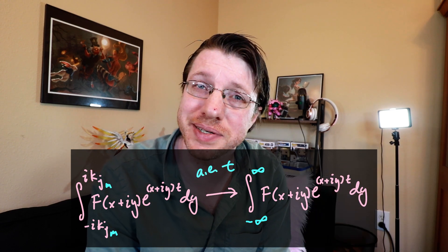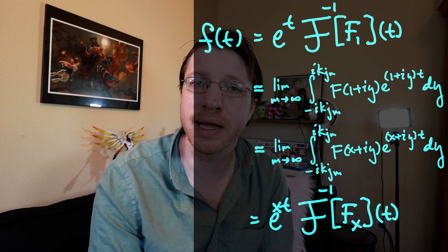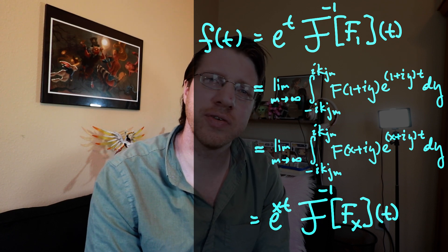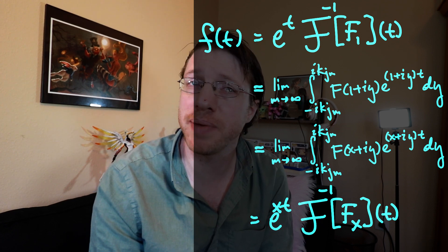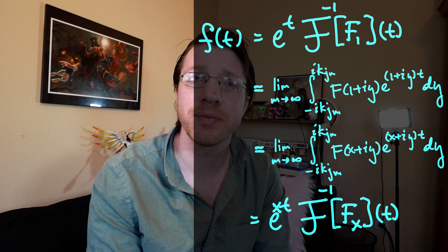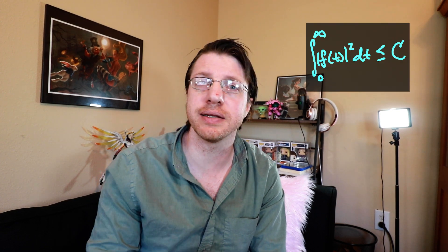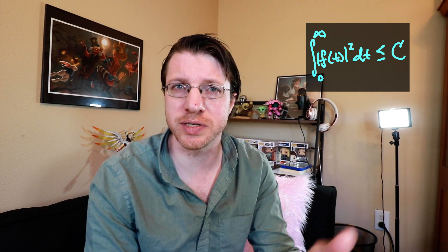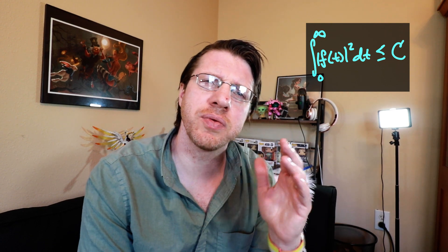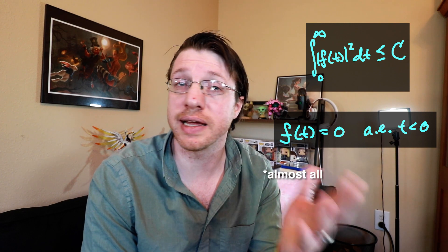We have now established a chain of equalities. Starting with our signal f, almost everywhere this whole chain works out, and we see that the selection of our vertical line does not actually matter — it gives us the same signal almost everywhere, which is the best you can hope for with an L2 signal. Now let's verify the other properties we wanted: first, that the norm is bounded by the same constant that bounded the analytic function over each vertical strip, and second, that the signal is zero for all negative t.